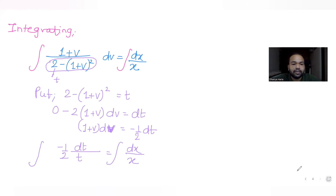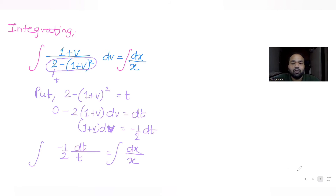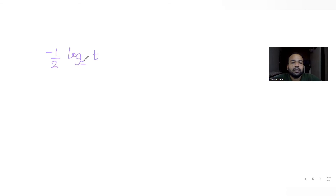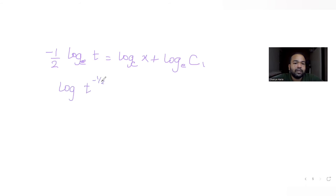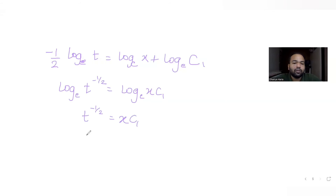So the left side becomes minus (1/2) times the integral of dt/t, which equals the integral of dx/x on the right. Evaluating: minus (1/2) ln|t| equals ln|x| plus ln(C₁). This can be written as ln(t^(−1/2)) equals ln(x·C₁), so t^(−1/2) equals x·C₁, or equivalently 1/√t equals x·C₁.